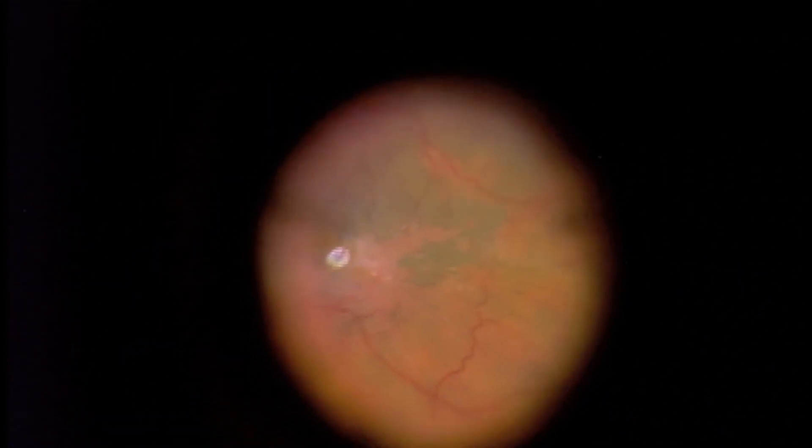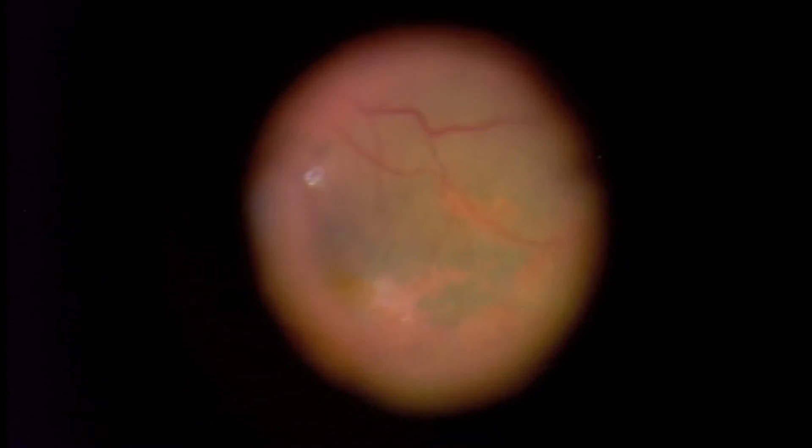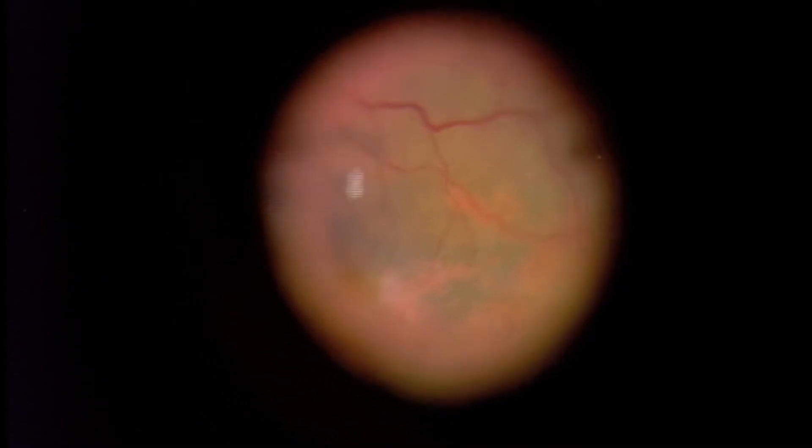And you're going to see a very faint green patchy material, there you go, that is actually lying on the surface of the retina. And this is the macular pucker or epiretinal membrane.